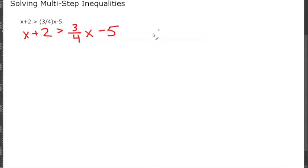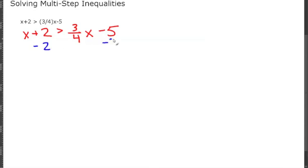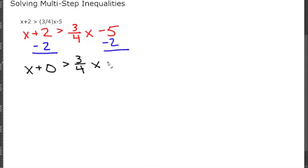We want to combine like terms. We have an X on the left side and an X on the right side, and numerical values on both sides. Let's start with the numerical values. We can move the 2 to the right by subtracting 2 from both sides, leaving us with X is greater than (3/4)X minus 5 minus 2.